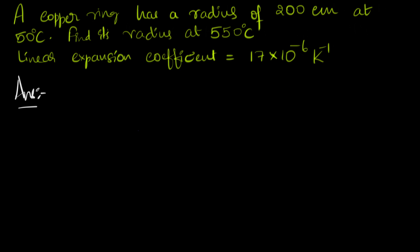Let's do it. Let's first write down what's given to us. We have a copper ring which has a radius of 200 centimeters. So here is our copper ring. It has a radius, let's call that radius as R. That radius R is 200 centimeters at 50 degrees Celsius, which means the current temperature T is 50 degrees Celsius.